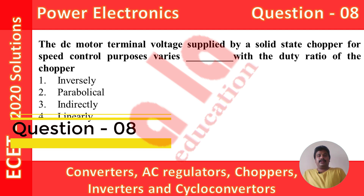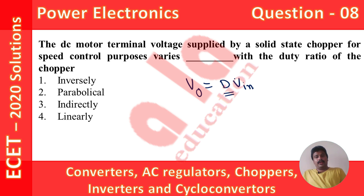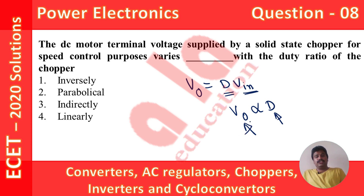Coming to question number 8. The DC motor terminal voltage supplied by a solid-state chopper for speed control purposes varies with the duty ratio of the chopper. This was a repeated question, also asked in 2019 and 2018 ESET examinations. For any DC-to-DC converter, the output voltage V0 = D × VIN, where D is the duty ratio of the chopper. Since VIN is kept constant, V0 is proportional to D — this is a linear relation. So the answer is linearly, and option 4 is the correct option.